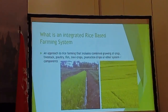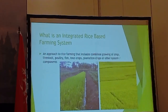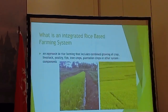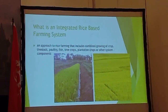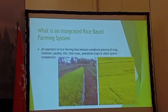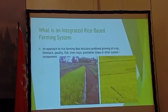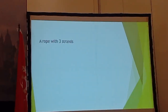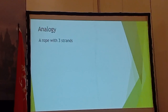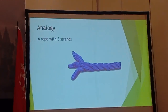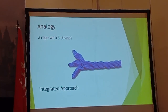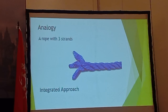This is an approach to rice farming that includes combined growing of crops, livestock, poultry, fish, fruit trees, plantation crops, and other system components. So this is like a rope with three strands — a very integrated approach.